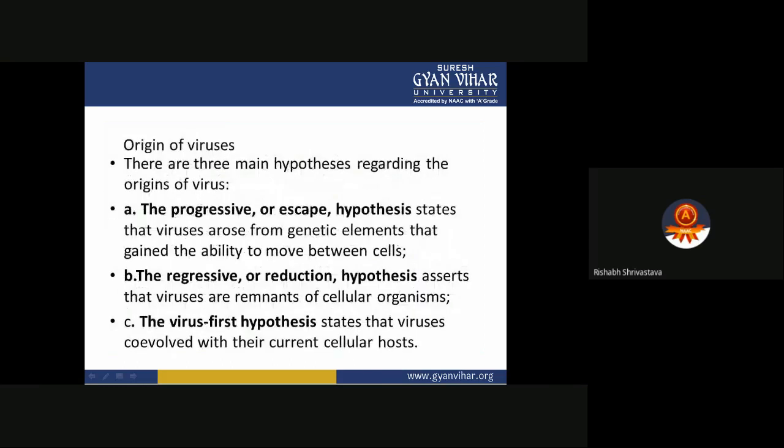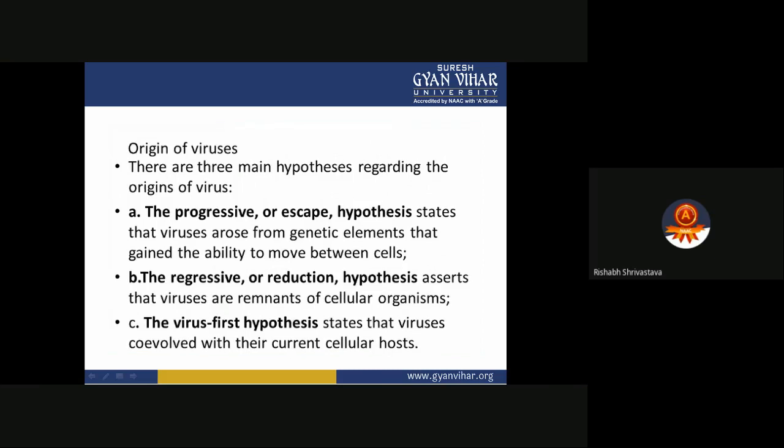There are three main hypotheses regarding the origin of viruses: the progressive, the regressive, and the virus-first hypothesis. The progressive or escape hypothesis states that viruses arose from genetic elements that gained the ability to move between cells. The regressive or reduction hypothesis asserts that viruses are remnants of cellular organisms. The virus-first hypothesis states that viruses co-evolved with their cellular hosts.